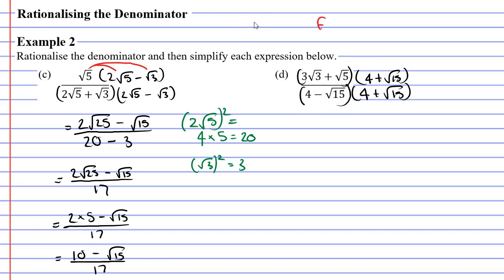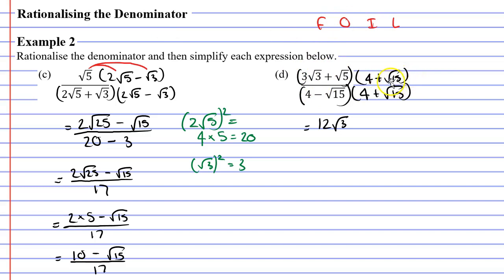FOIL stands for first, outer, inner, and last. The first terms in each set of brackets are 3 root 3 and 4: 3 times 4 is 12, and then we have root 3, giving us 12 root 3. Moving on to the outer terms — 3 root 3 and root 15: multiplying the roots, 3 times 15 is 45, so we get root 45, and we also had the whole number 3, giving us 3 root 45. We add this.